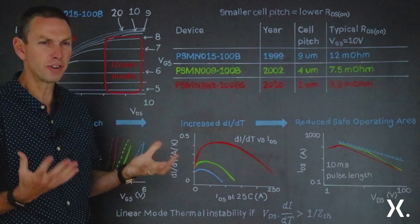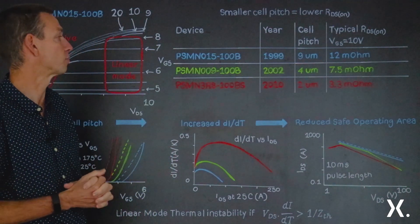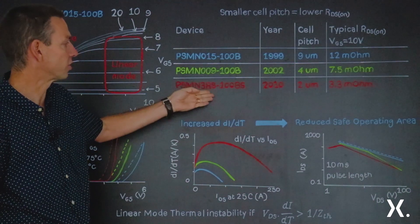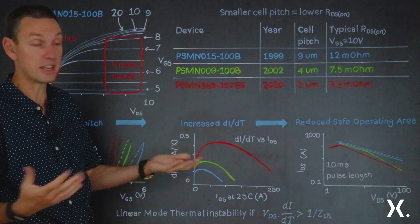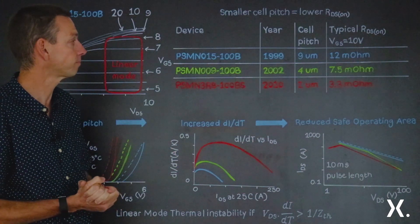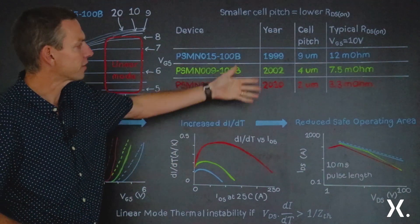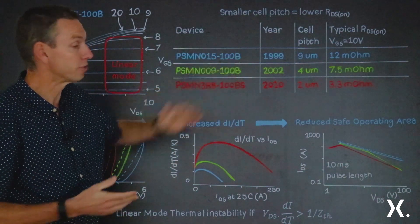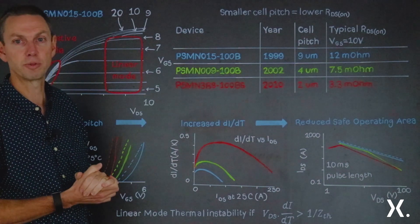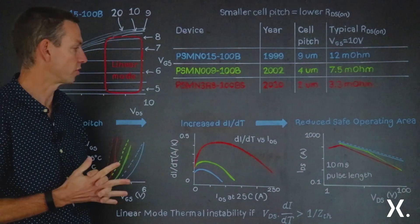The primary function of a MOSFET is always as a switch — you want it to have as low resistance as possible. So for its primary function, the PSMN3R8-100BS is a better product because of its low resistance. But now what we want to consider is how these MOSFETs perform in the linear mode situation.